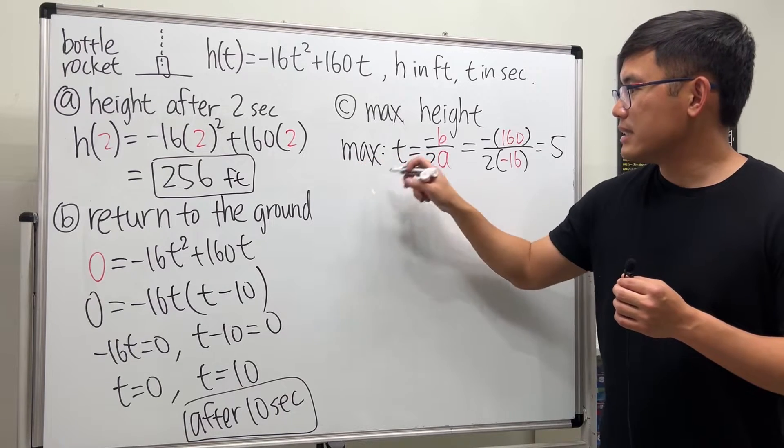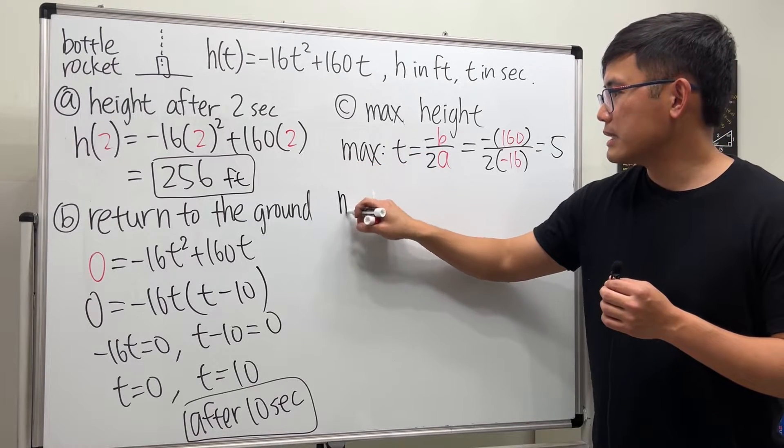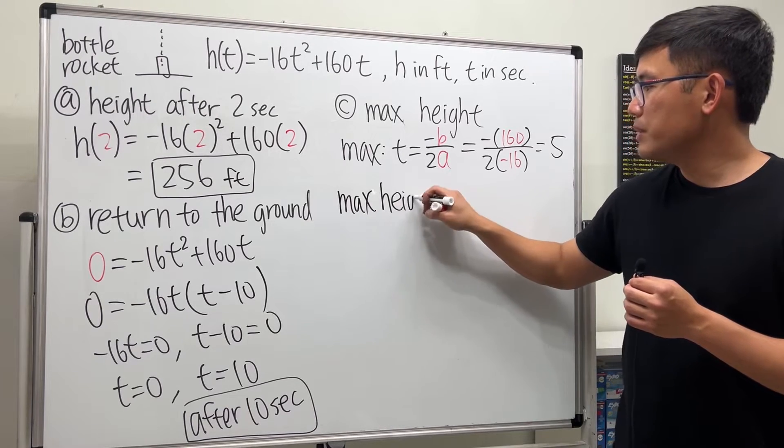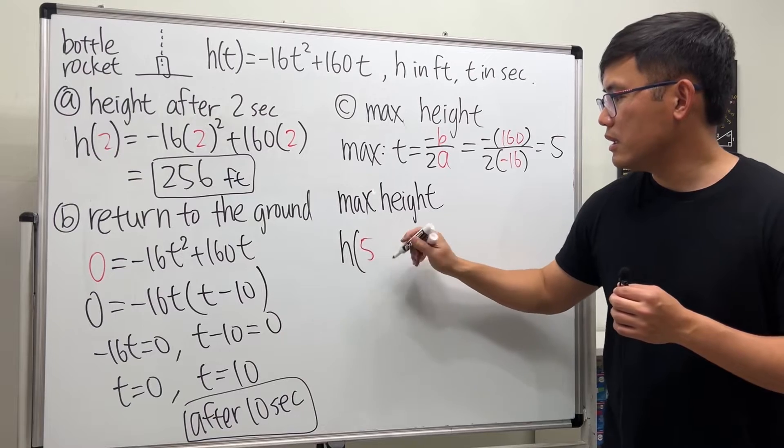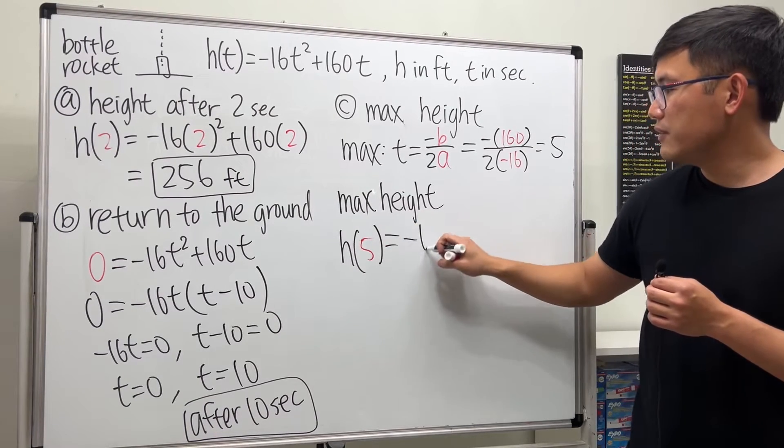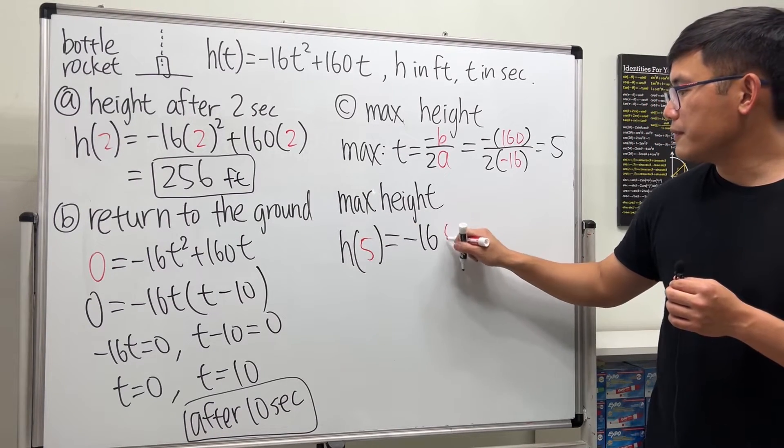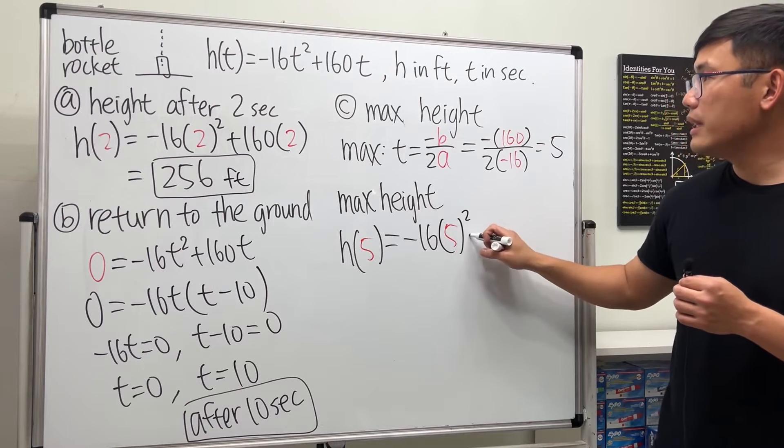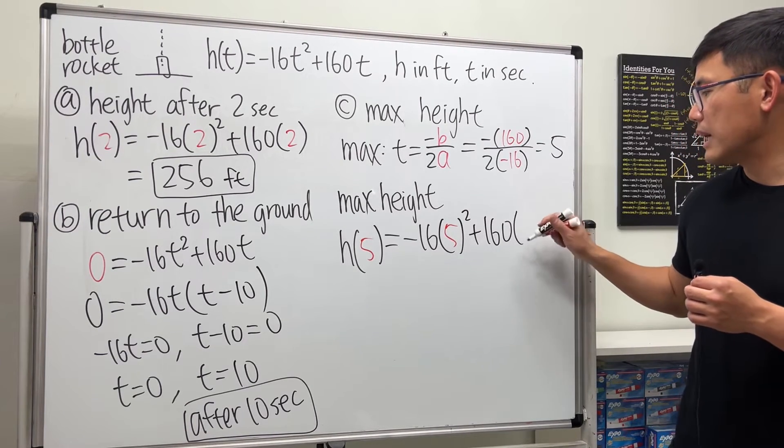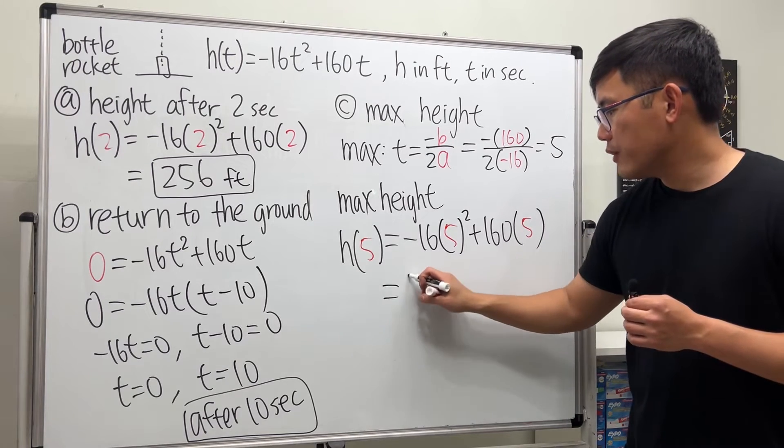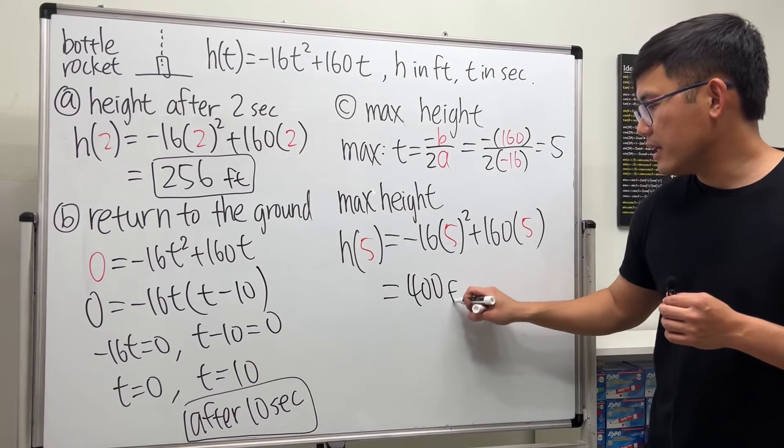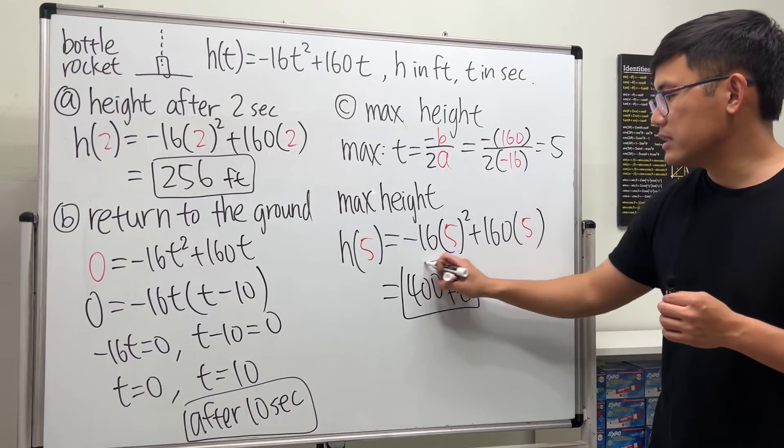This is only the maximum t value. The maximum height is h(5) = -16(5)² + 160(5). Work that out and you get 400. Again, let's attach a unit for this, so the answer is 400 feet.